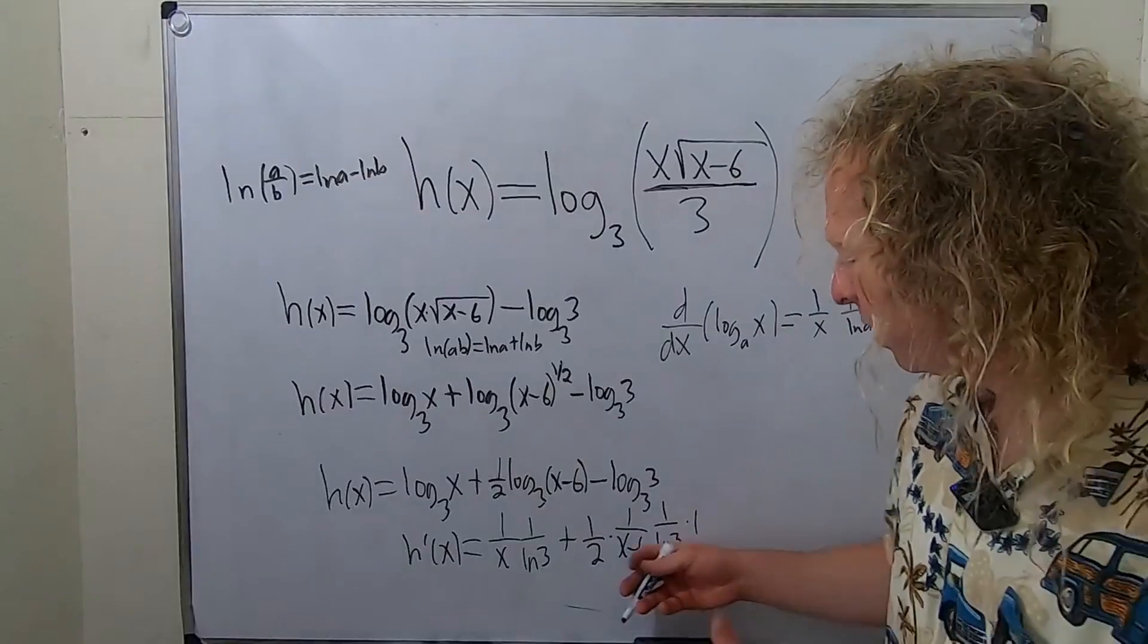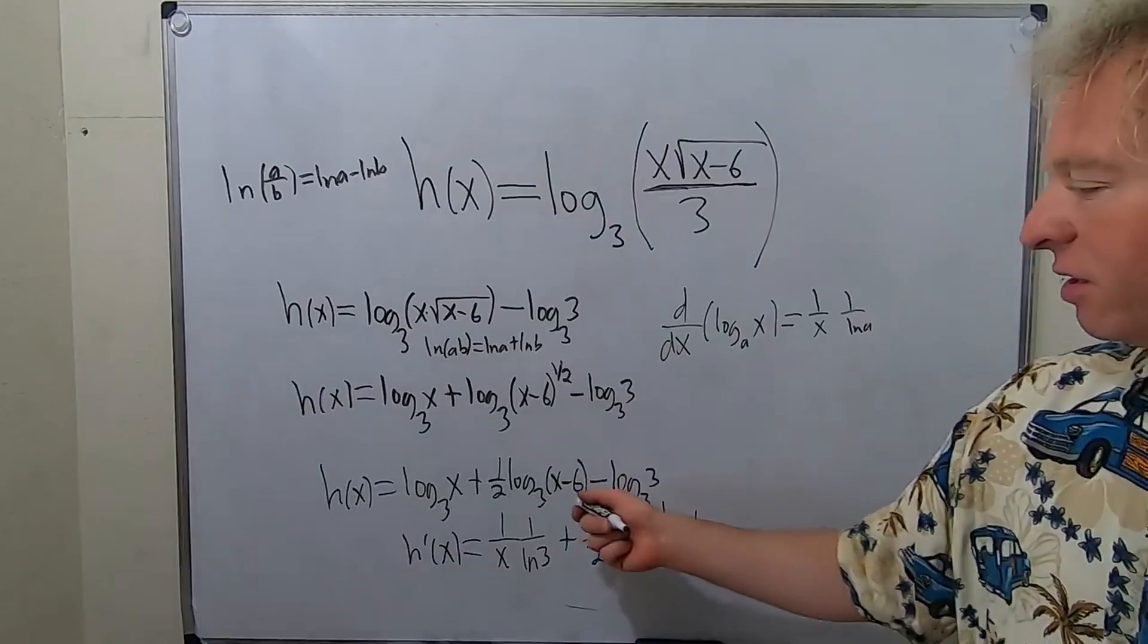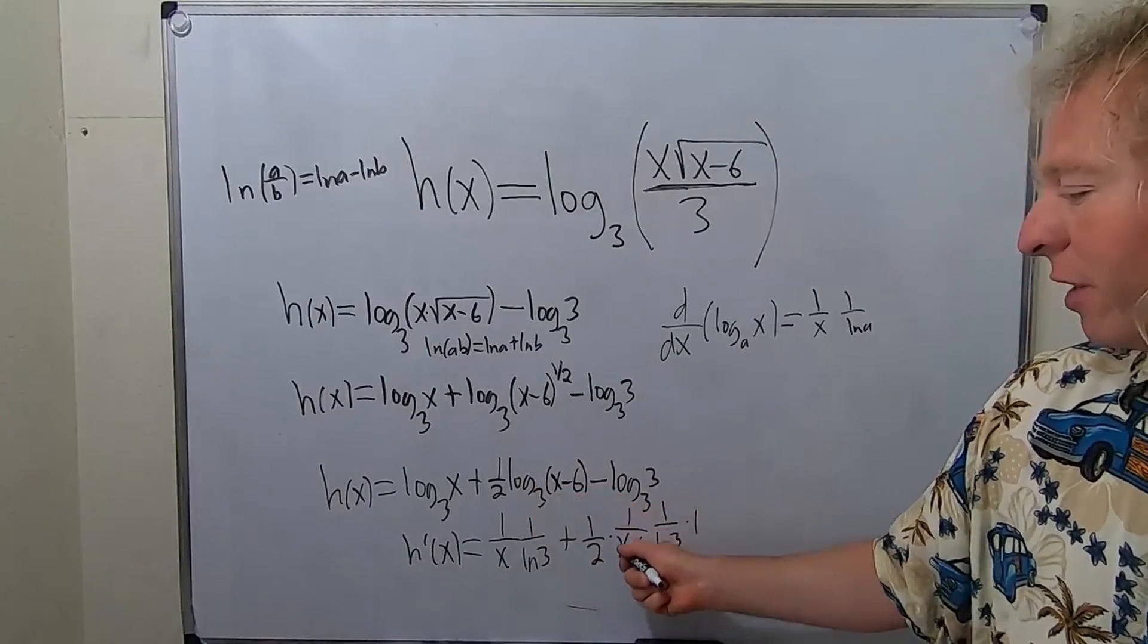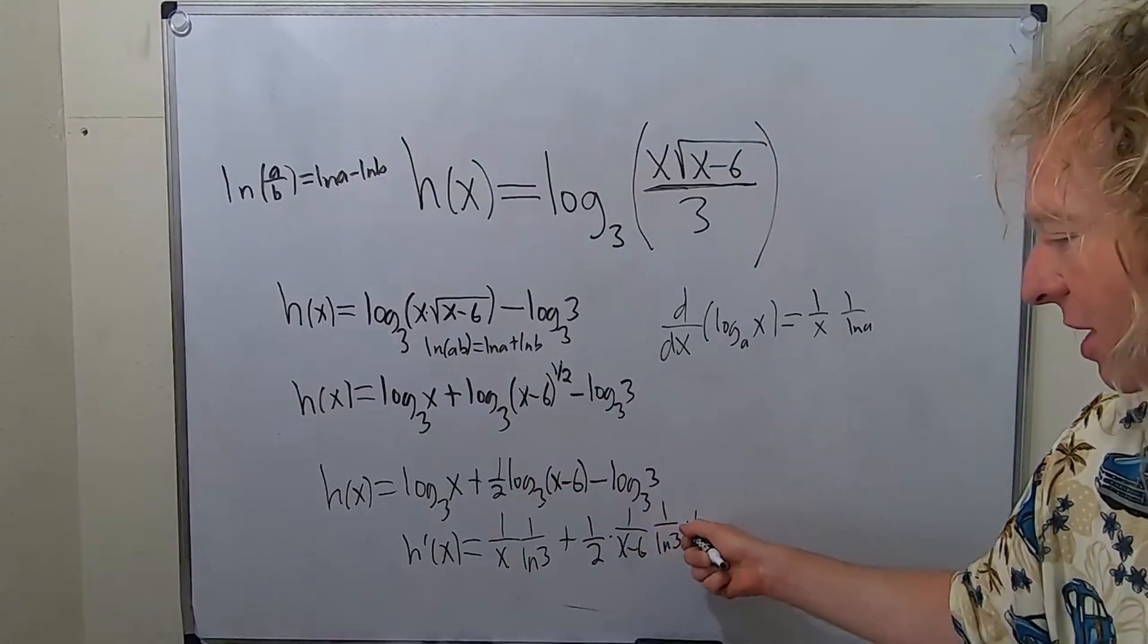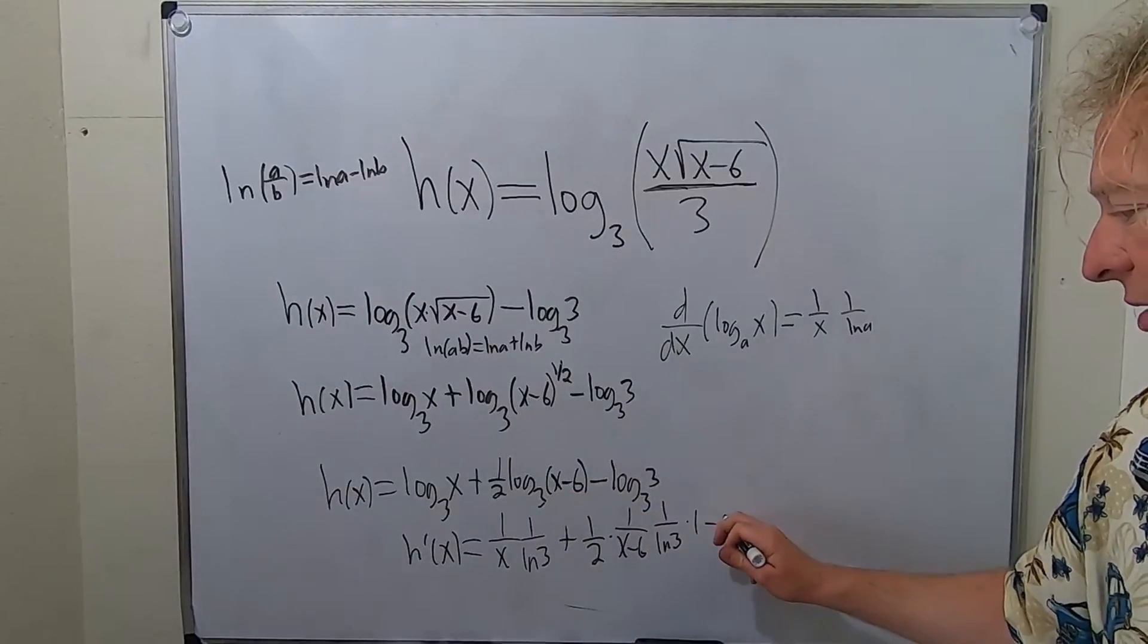It wouldn't have mattered in this case if you put the 1 here or here, but I just want to emphasize that's how the process works. So the derivative of the outside is 1 over x minus 6, 1 over ln 3, times the derivative of the inside, which is 1. And this derivative here is 0, so minus 0.